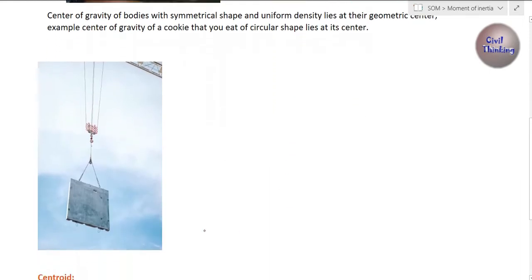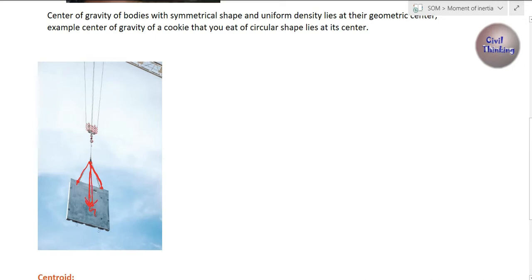Look at this diagram: a crane is lifting a body. The body is connected to the crane at two points, and these two wires are connected to a pulley. If you draw a line, it passes exactly through the center of gravity. The wires are connected at those points such that the resultant of all the wire forces acts through the center of gravity.